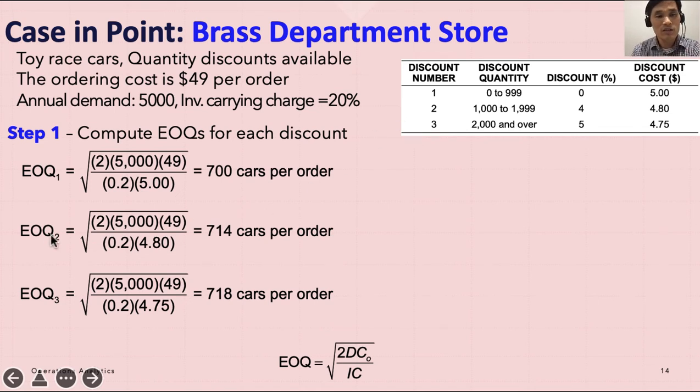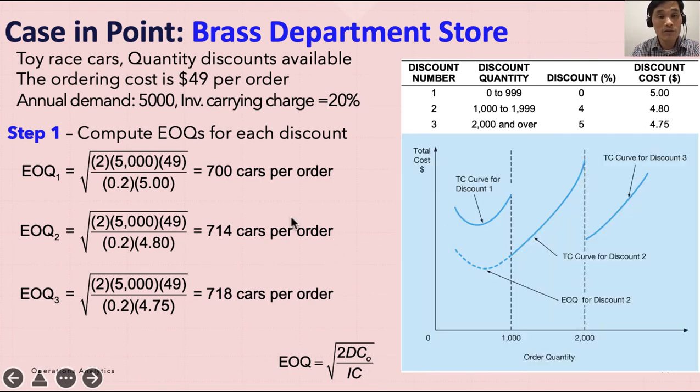The second discount interval, if you use the same formula with $4.80 as the discounted price, then you get 714 cars per order for your economic order quantity. Similarly, for EOQ₃ you get 718 cars per order. EOQ was calculated by using 2DC over IC, where I is the discount rate and C is the cost of the product.